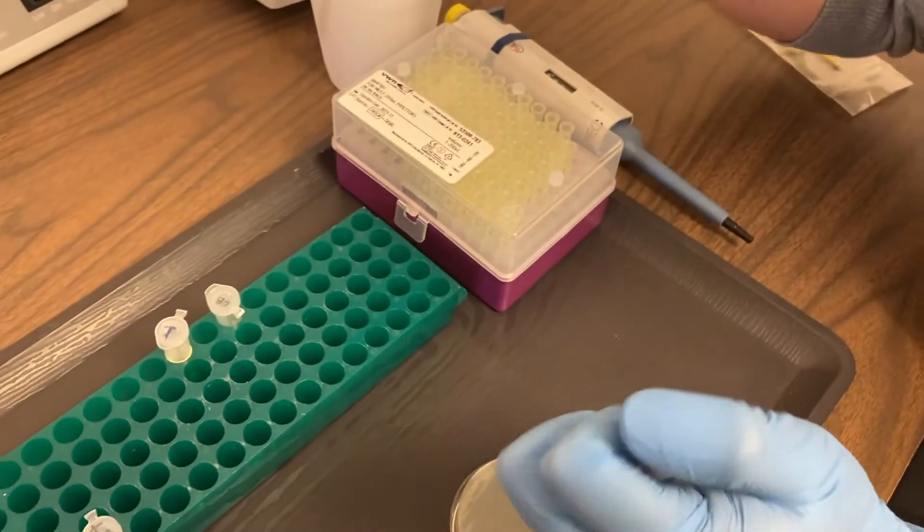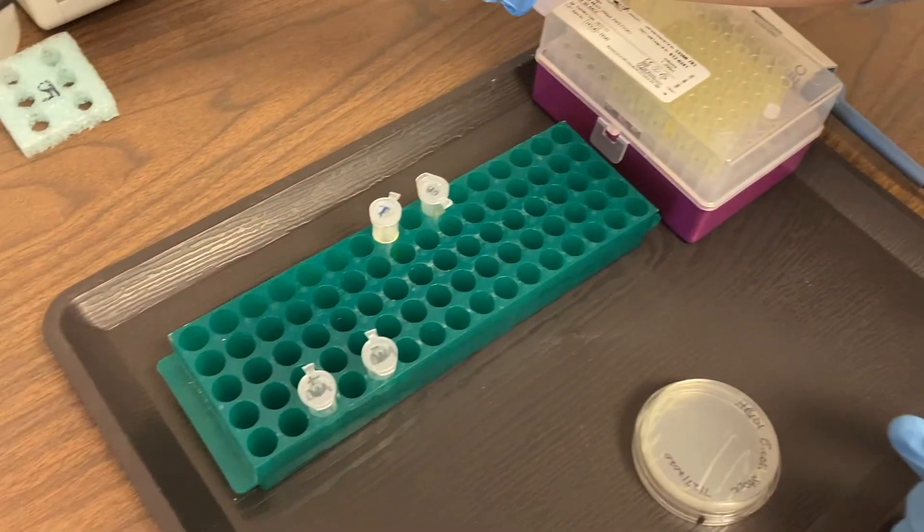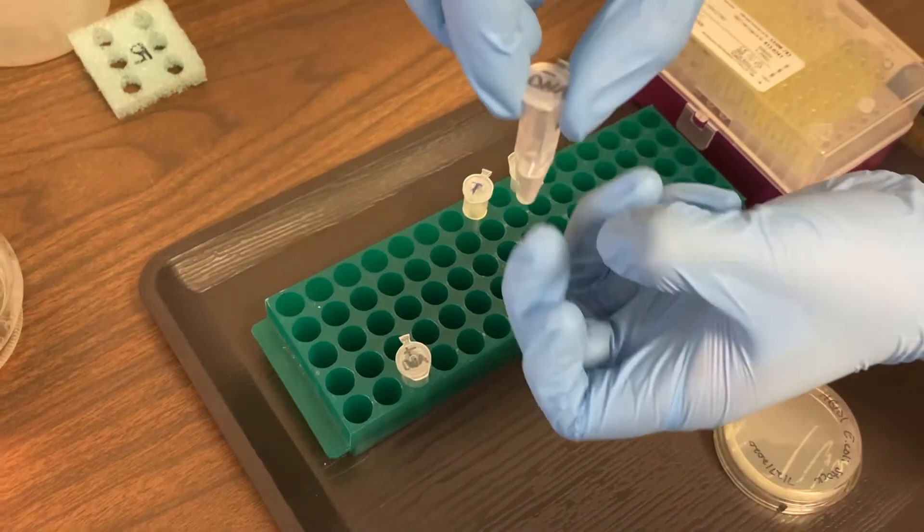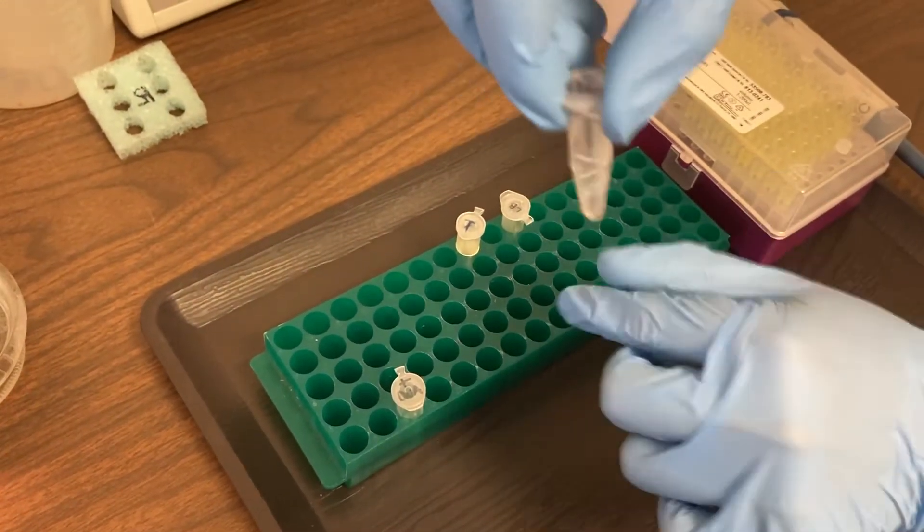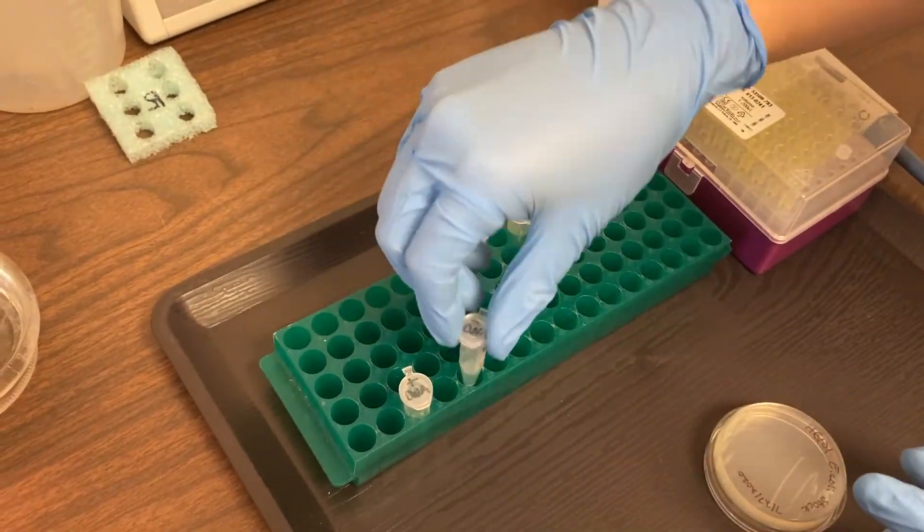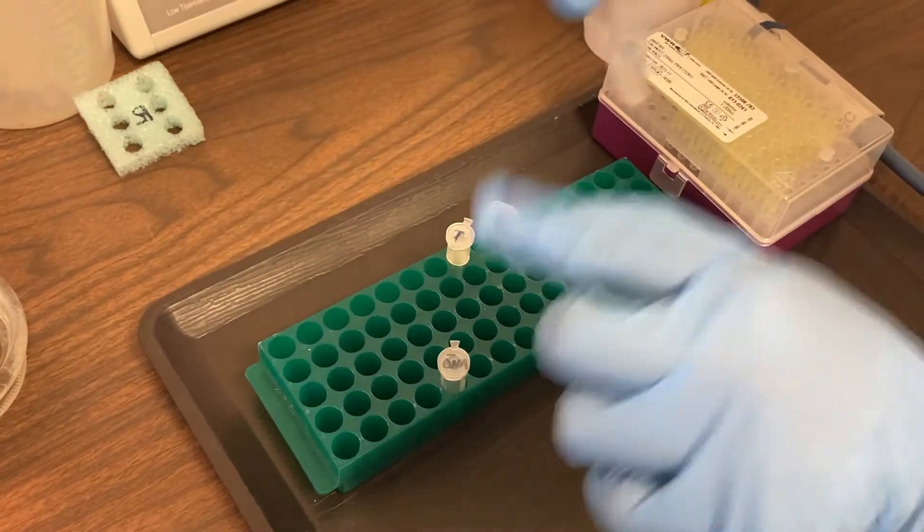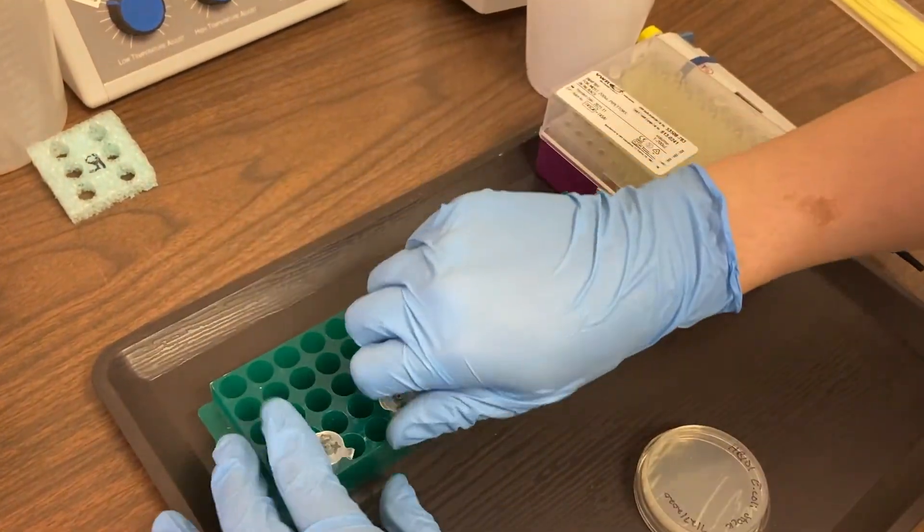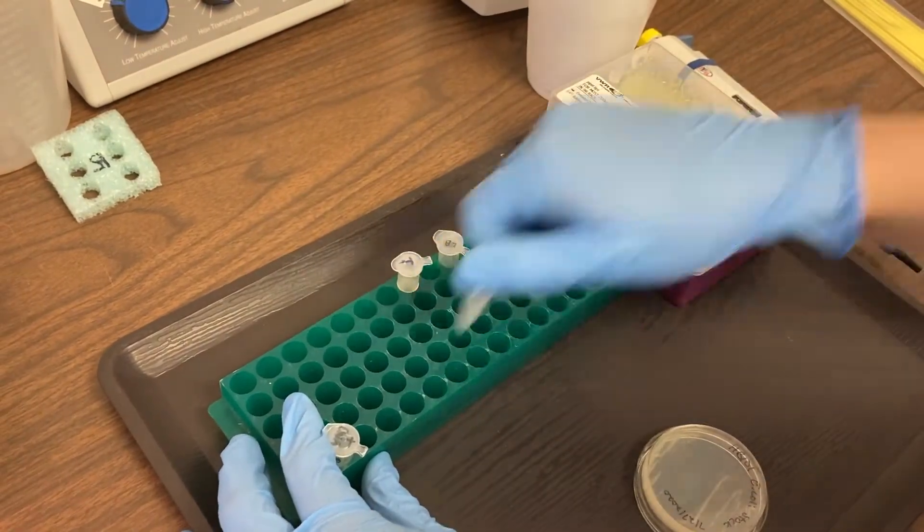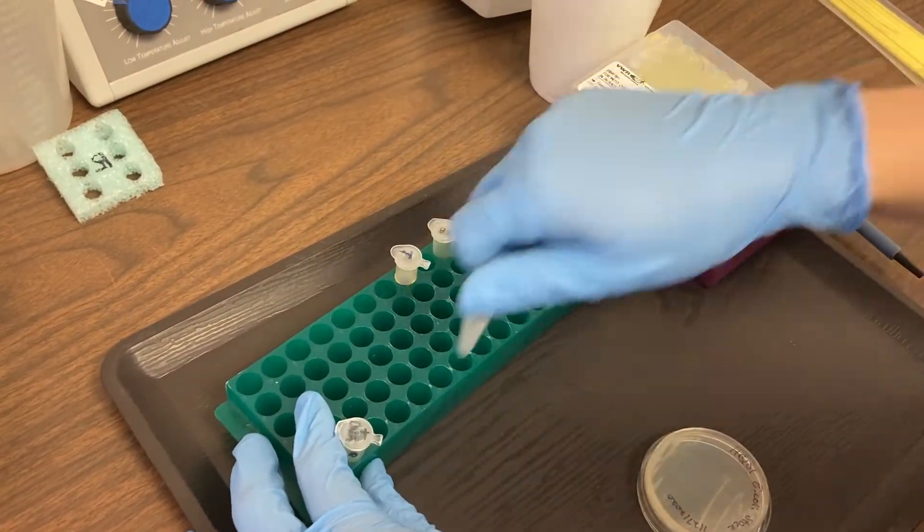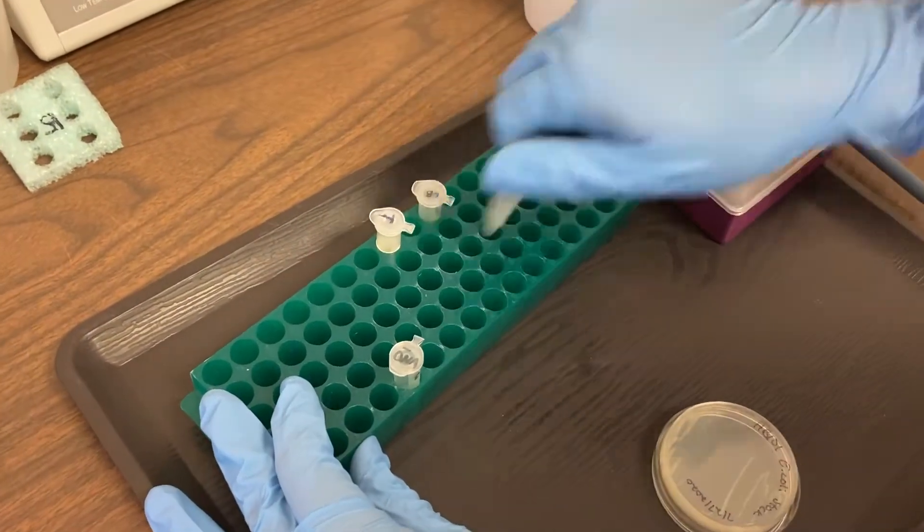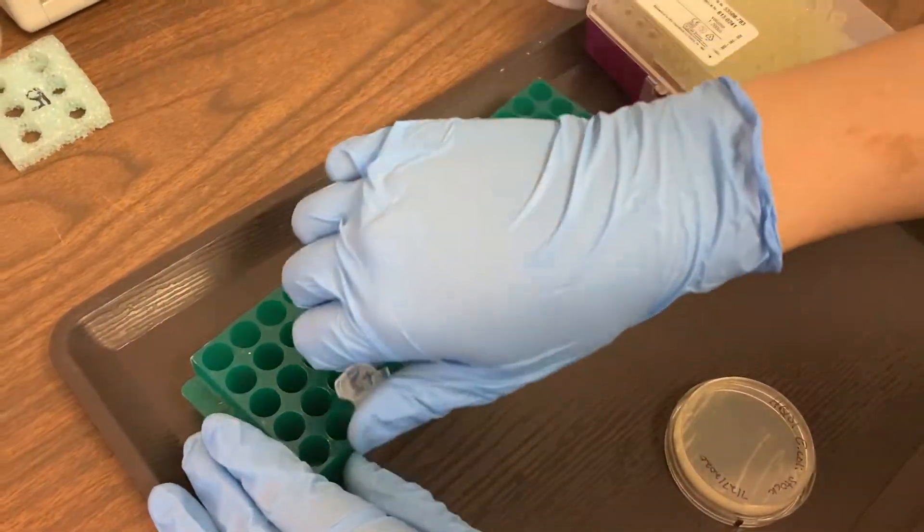Now that our bacteria is in there, we're going to make sure it is mixed well with the calcium chloride. One way we can do that is by flicking the tube. Make sure you have a good grip on the top before you do this. Second way you can do this is called racking your microtube. You use your microtube rack and run the tube across the top. It does a really good job of mixing up the bacteria into that calcium chloride.